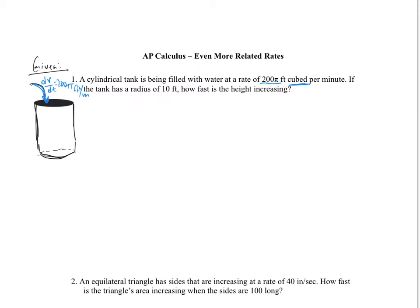If this tank has a radius of 10 feet, how fast is the height increasing? Water's coming in, and we've got something increasing at dh/dt — that's what we're being asked to find. Since we have a cylindrical tank, we know the volume formula: V = pi r squared h.